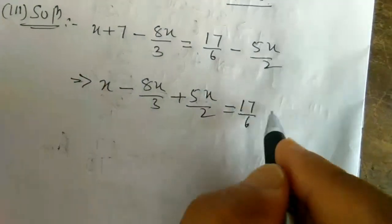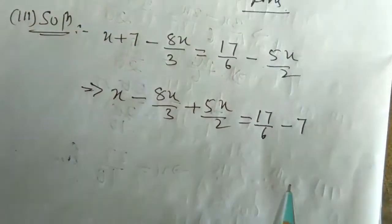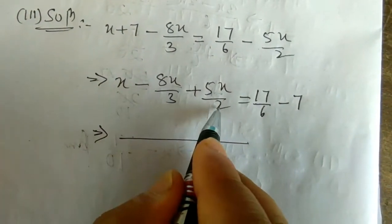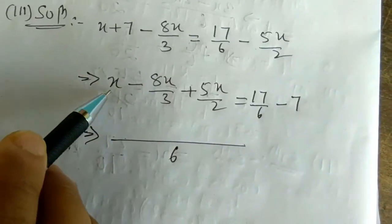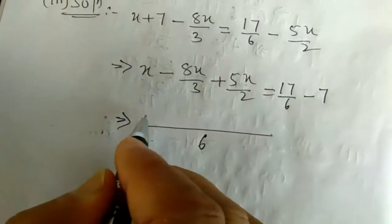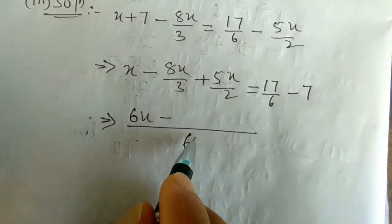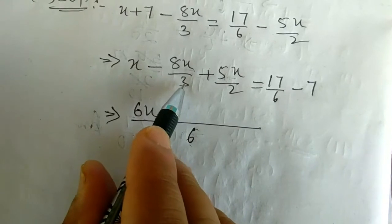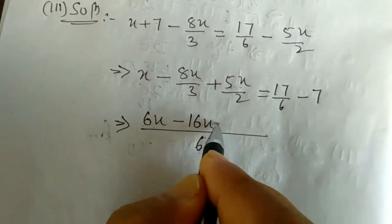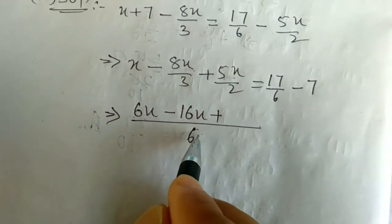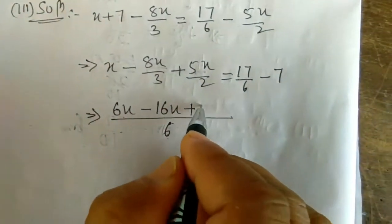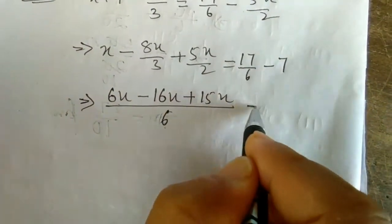Taking LCM of 3 and 6 on the left, LCM is 6. Dividing 6 by 1 (no denominator for x) gives 6x. Dividing 6 by 3 gives 2, so minus 2 × 8x = 16x. Plus, dividing 6 by 2 gives 3, so 3 × 5x = 15x. On the right, LCM is 6 also. 17 stays as 17, and 6 × 7 = 42.